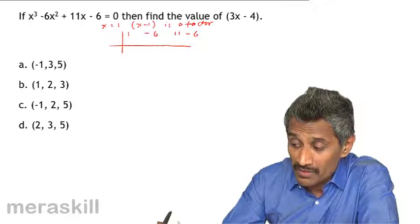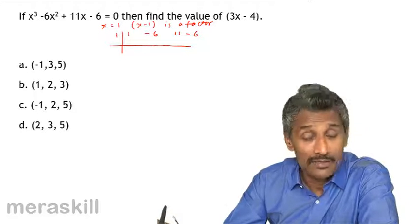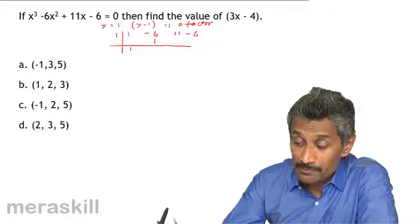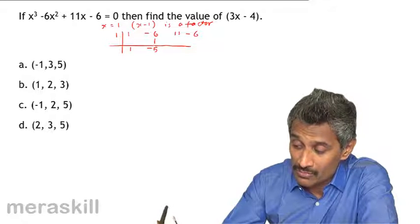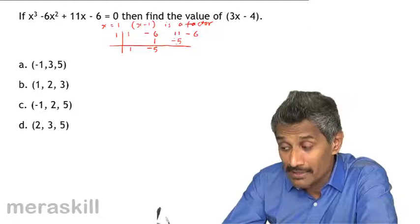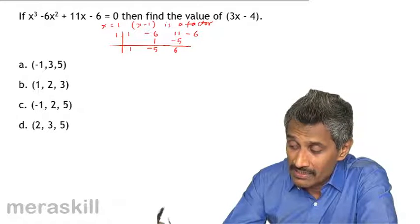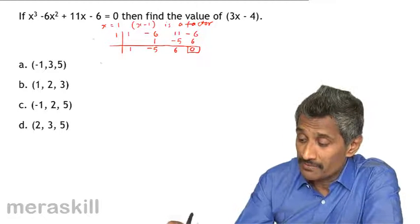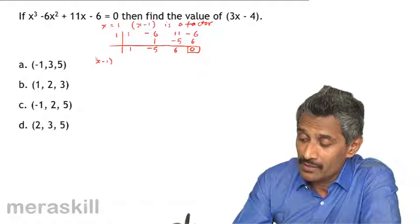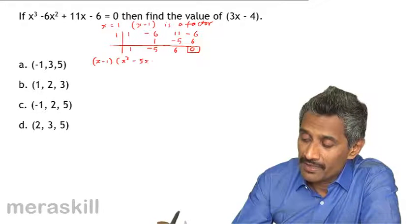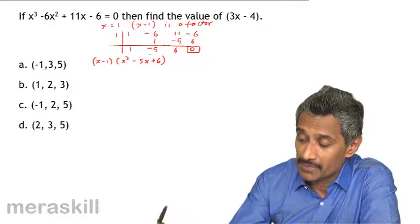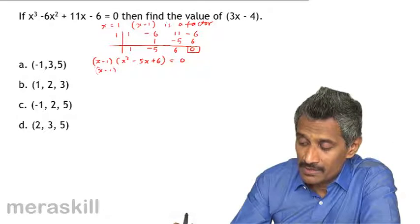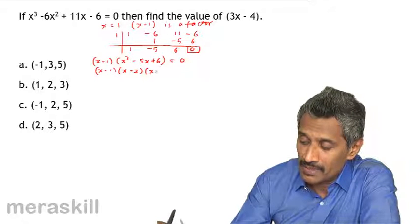We put the opposite of -1, which is 1. First coefficient: 1. Then 1 × 1 = 1; -6 + 1 = -5. Then 1 × (-5) = -5; 11 + (-5) = 6. Then 1 × 6 = 6; -6 + 6 = 0. The factorization becomes (x - 1)(x² - 5x + 6) = 0, which simplifies to (x - 1)(x - 2)(x - 3) = 0.